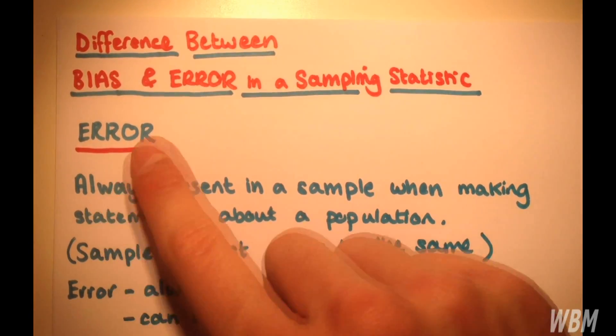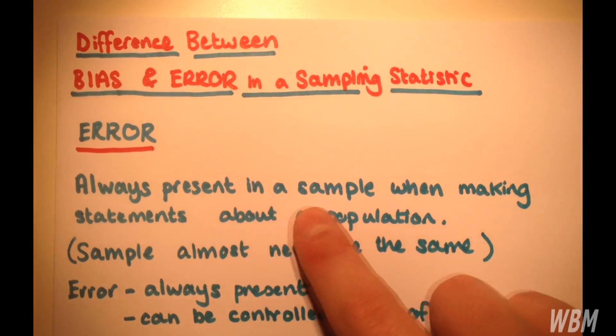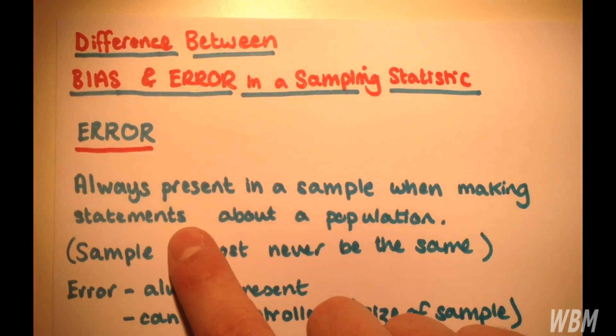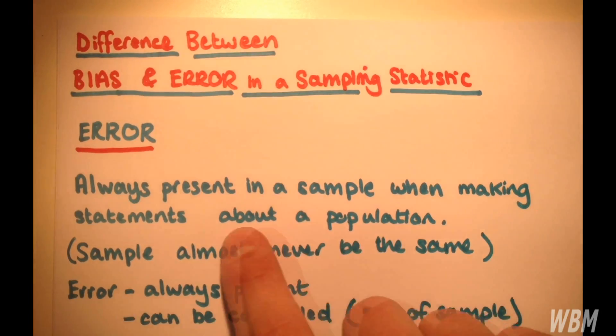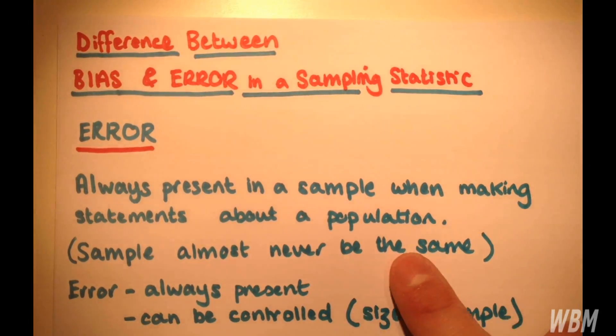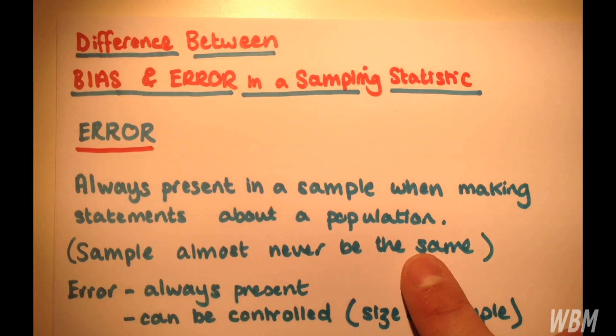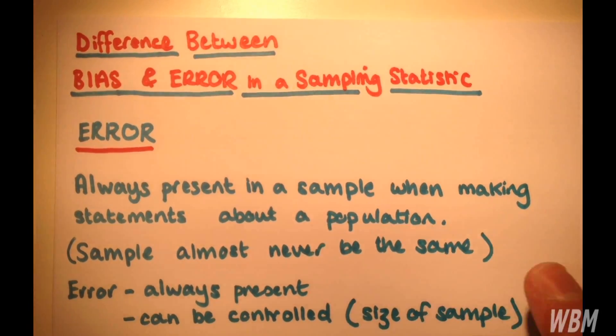So an error. Now an error is always going to be present in a sample when we're making a statement about a population, because the sample is almost never the same as the population. Because you're taking a sample from it, it's never going to be completely accurate.